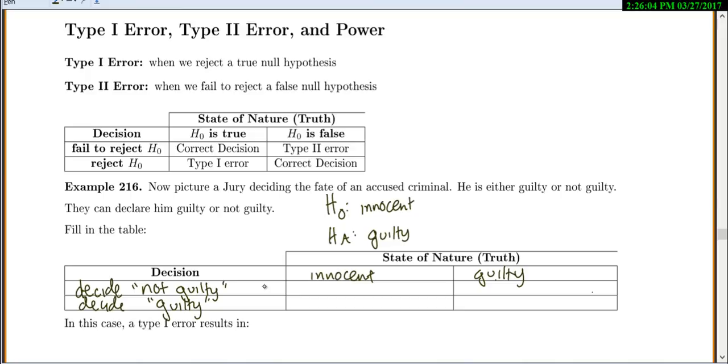If they're innocent and we say not guilty, that would be a correct decision. But if he's innocent and we decide they're guilty, that would be a type 1 error.